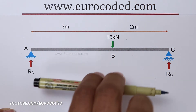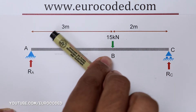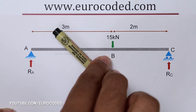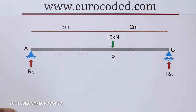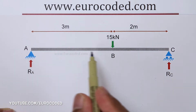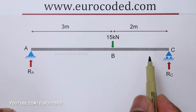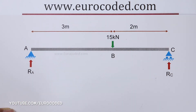Moments act about a point in a clockwise direction or anticlockwise direction, and a force has a clockwise or anticlockwise moment relative to a point. Therefore, if we move the point we take moments about, then the direction of the moment could change from clockwise to anticlockwise or vice versa.